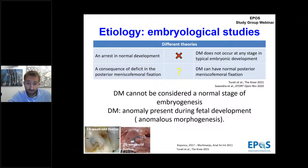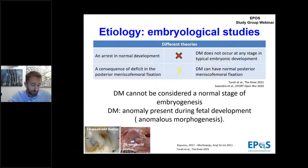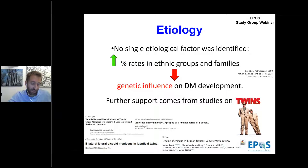We now know that the meniscus forms between 8 and 14 fetal weeks, and discoid meniscus cannot be considered a normal stage of embryogenesis. Discoid meniscus is an anomaly already present during fetal development, probably due to anomalous morphogenesis. At the moment, no single etiological factor has been identified, but the incidence rates in different ethnic groups and families suggest a genetic influence on the development of this anomaly, with support from studies on twins.